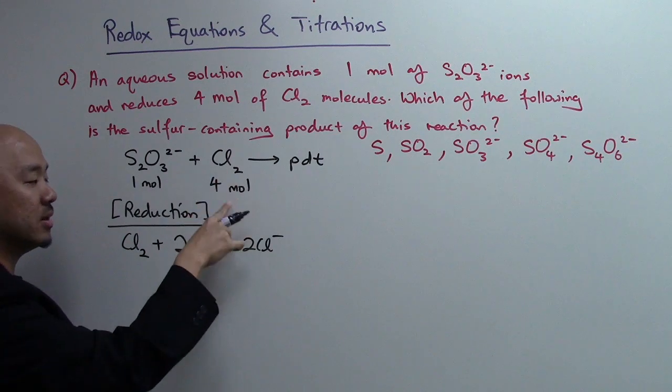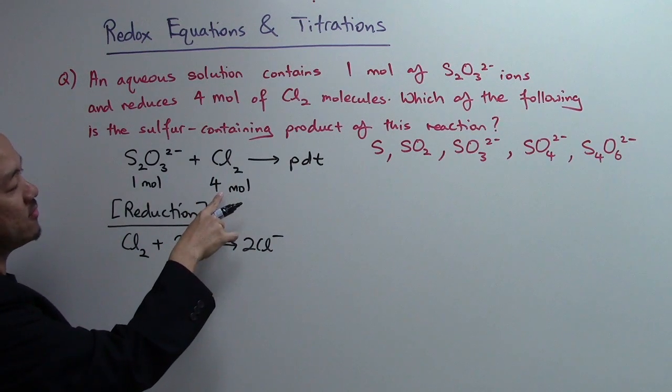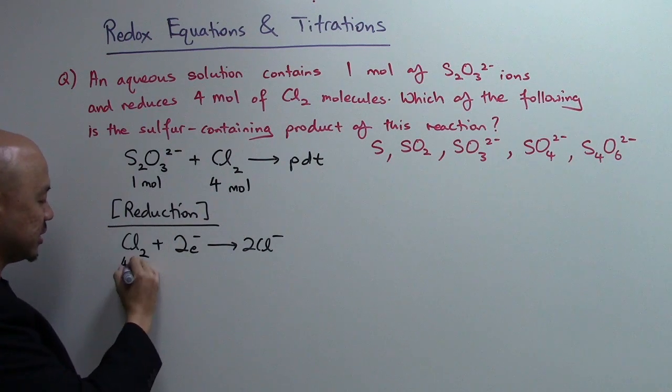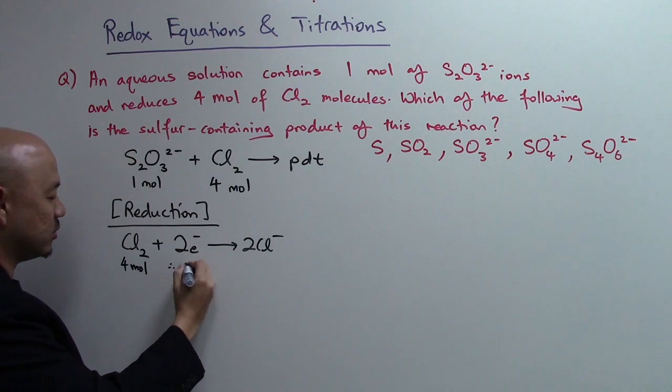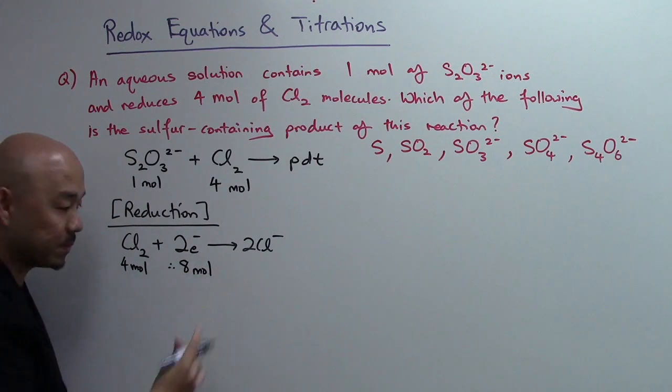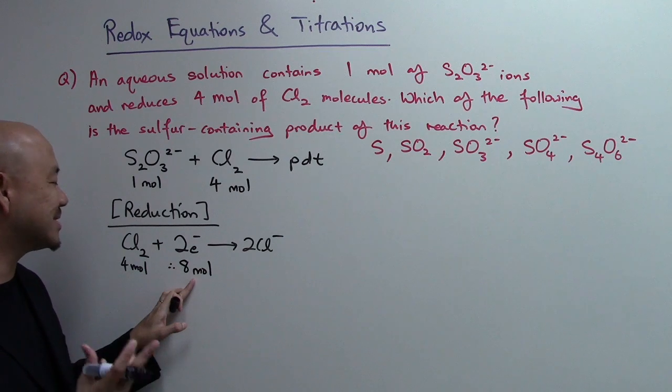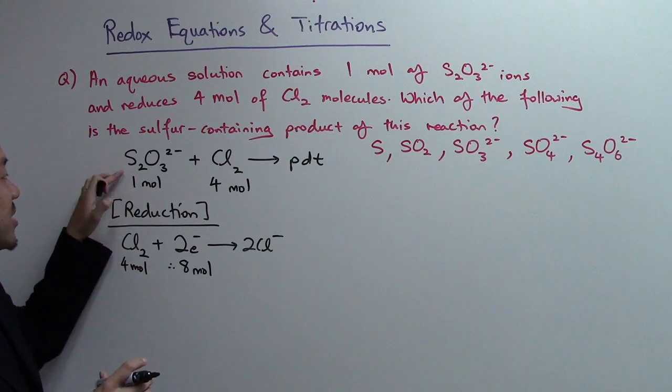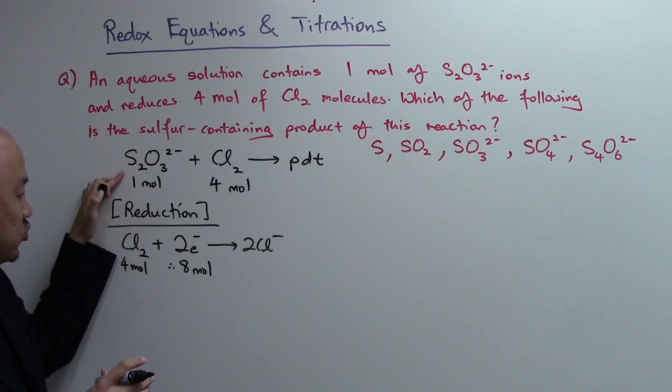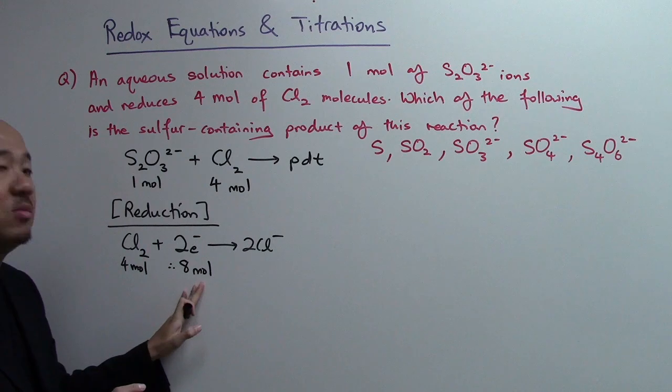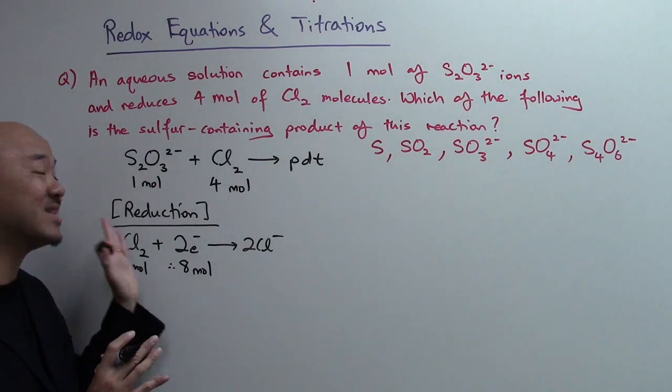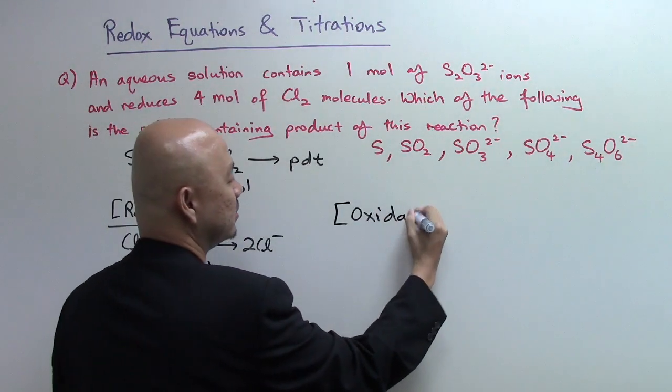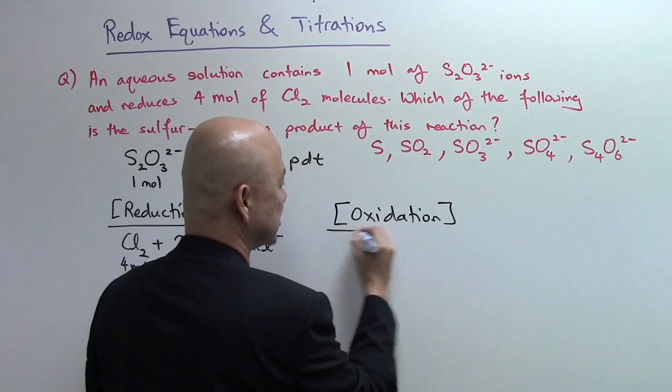In the question they say four moles of chlorine has been reduced. So here is four moles and the moles of electrons will be eight moles. So eight moles of electrons are being accepted by four moles of chlorine each time when it reacts with one mole of S2O32-. Basically, eight moles of electrons are transferred, whether in the reduction half or in the oxidation half. I'm going to look at the oxidation half right now.